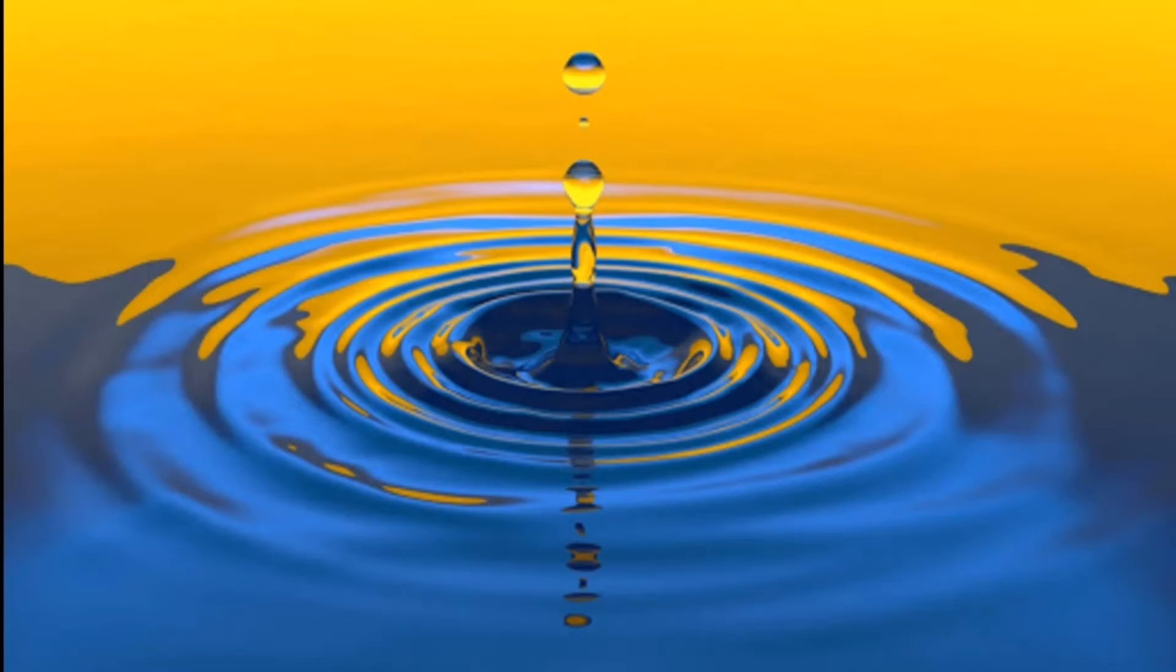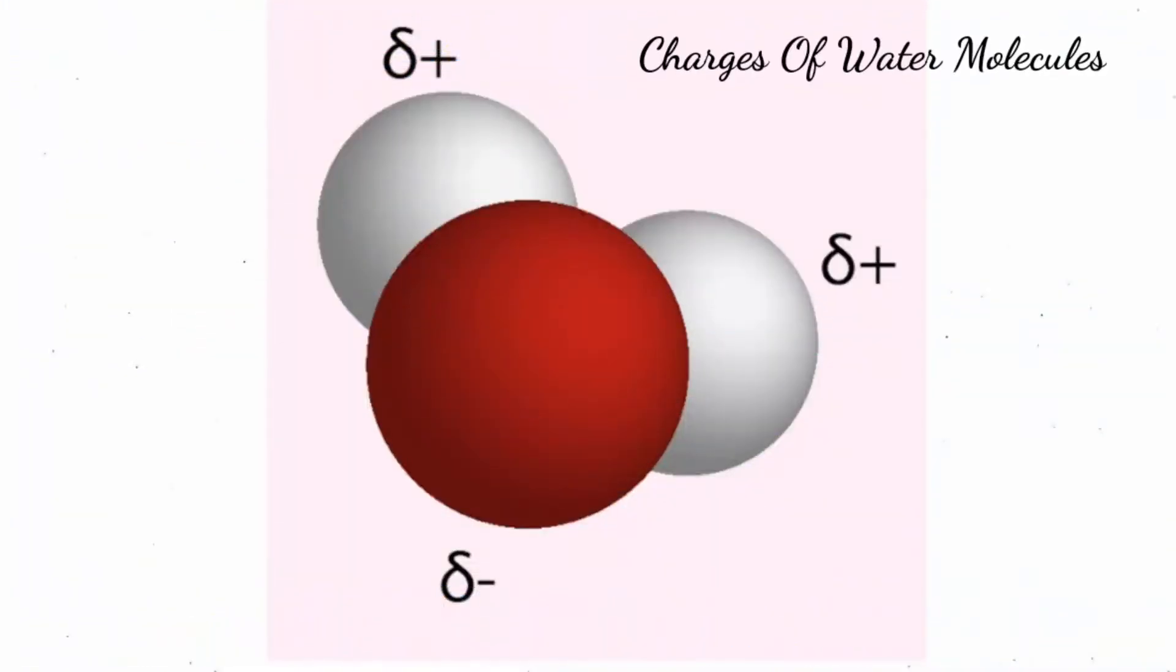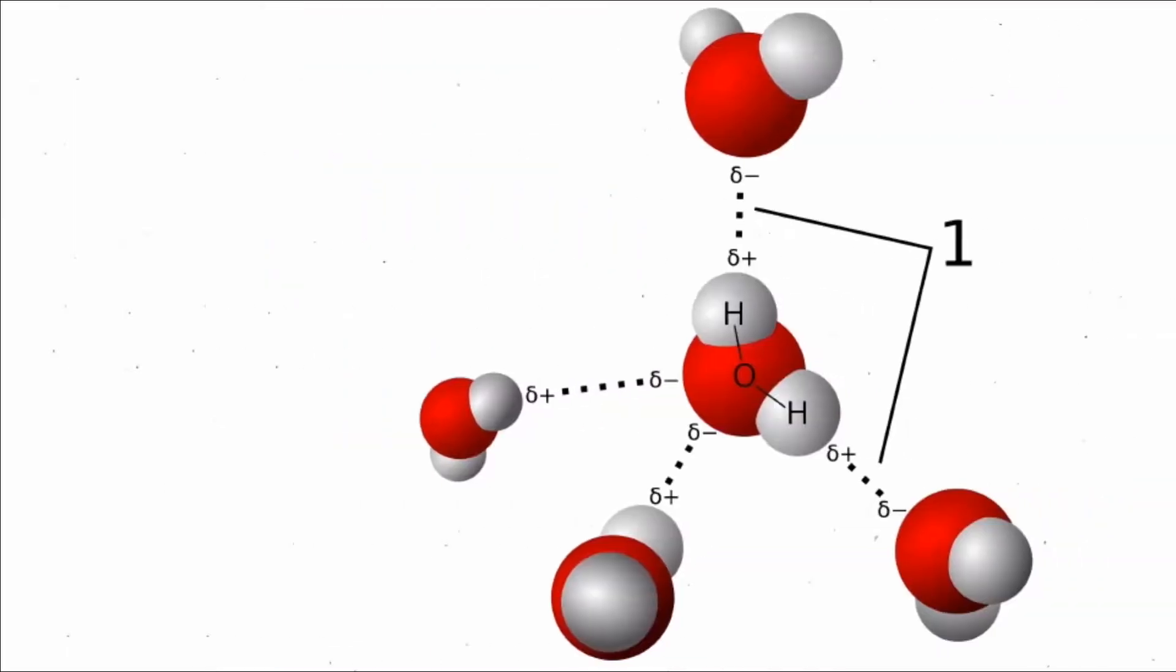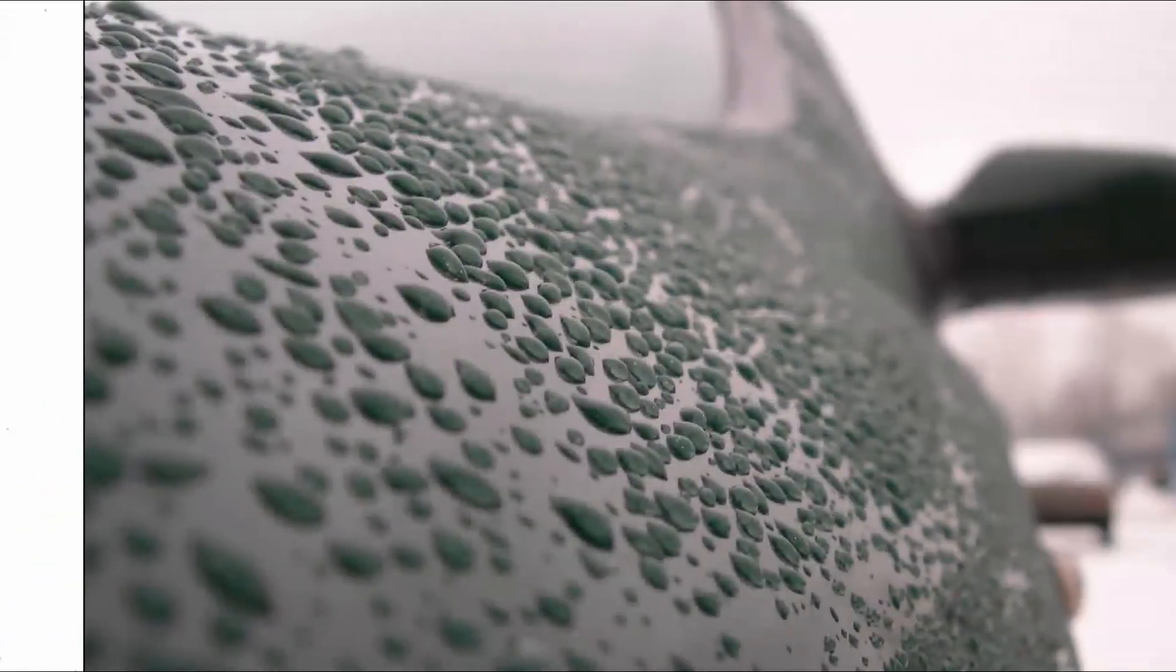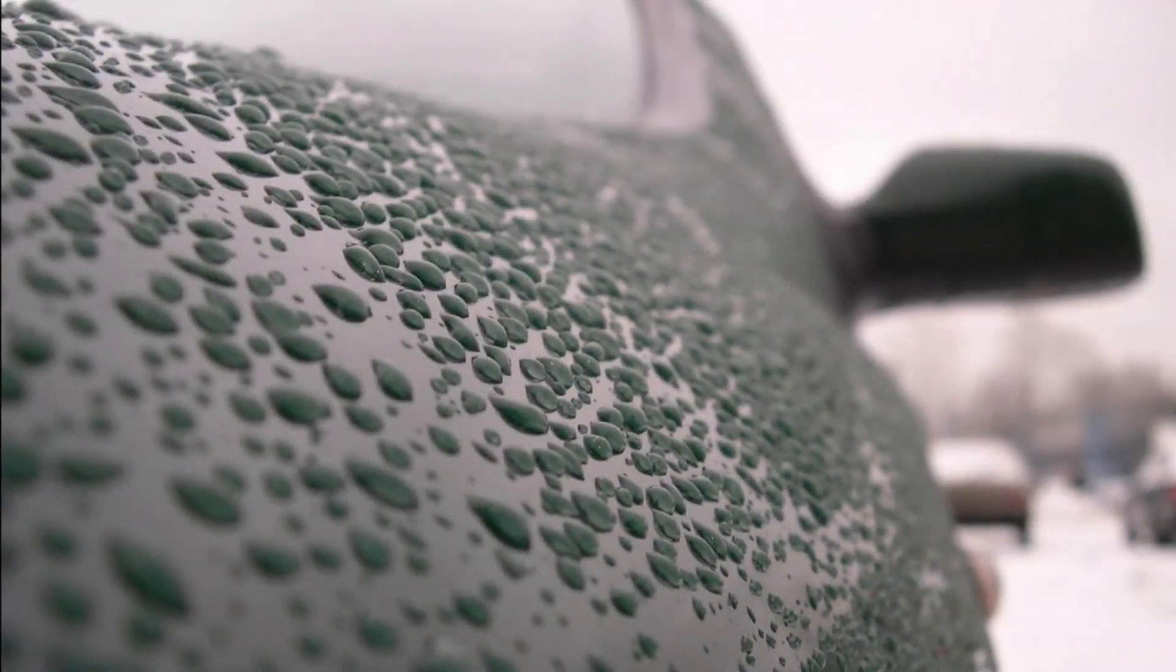This video is all about the variety of properties that water has which allows it to act as a solvent. We've already addressed the notion that water has some polarity to it in the previous videos. One end of the molecule has a partially negative charge and the other end has a partially positive charge. We've talked about how this leads to hydrogen bonds when multiple water molecules are placed near each other.